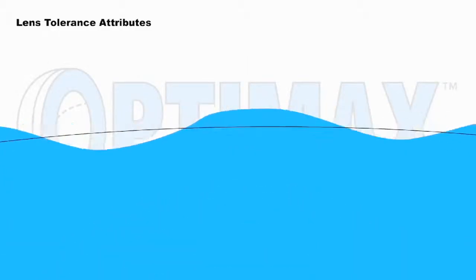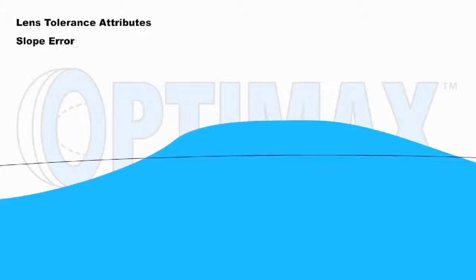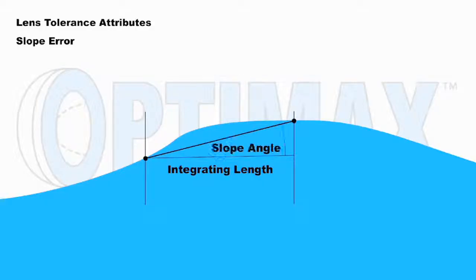Moving on to view a section of the lens surface, we can see what physical characteristic is represented in a slope error specification comprised of integrating length and slope angle.